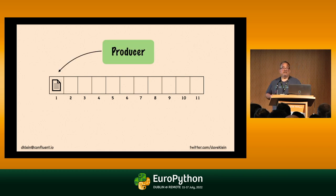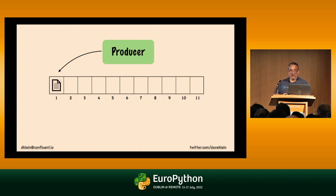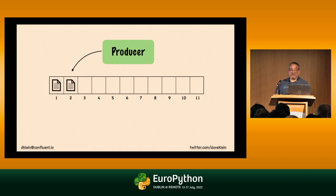The thing that writes events to the log is called a producer, which is part of the client library. The JVM library comes with Kafka since it's written in Java and Scala, but there are two good libraries for Python as well as libraries for Golang, .NET, Node.js, and even Rust. All of those have the same components — they all have a producer. The producer is a class you include in your application that does the writing of events to the topic. It keeps appending them to the end — events are immutable, you can't change something that already happened. You can add a new event that corrects what happened, but you can't change what happened.